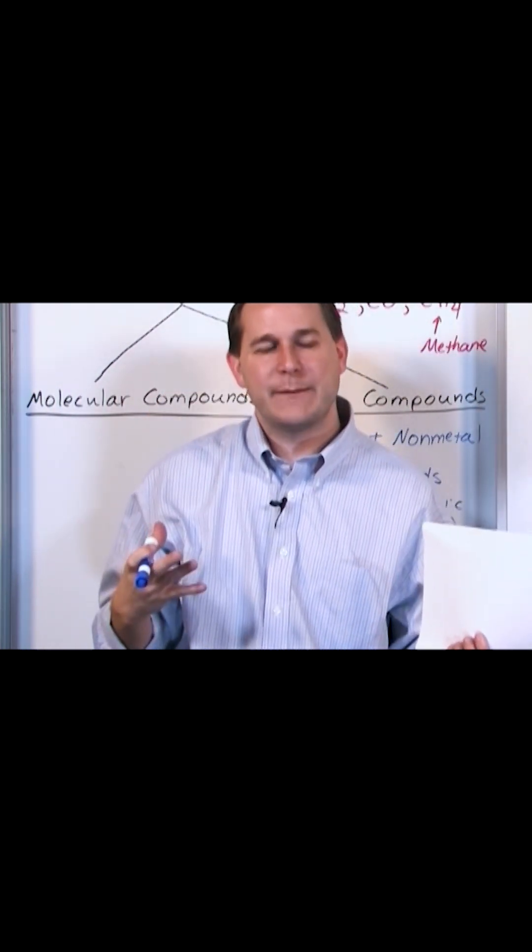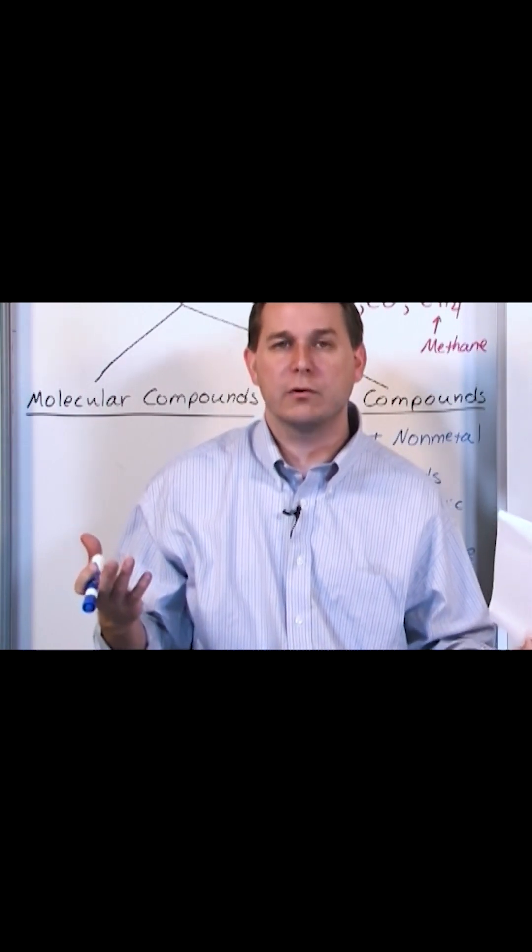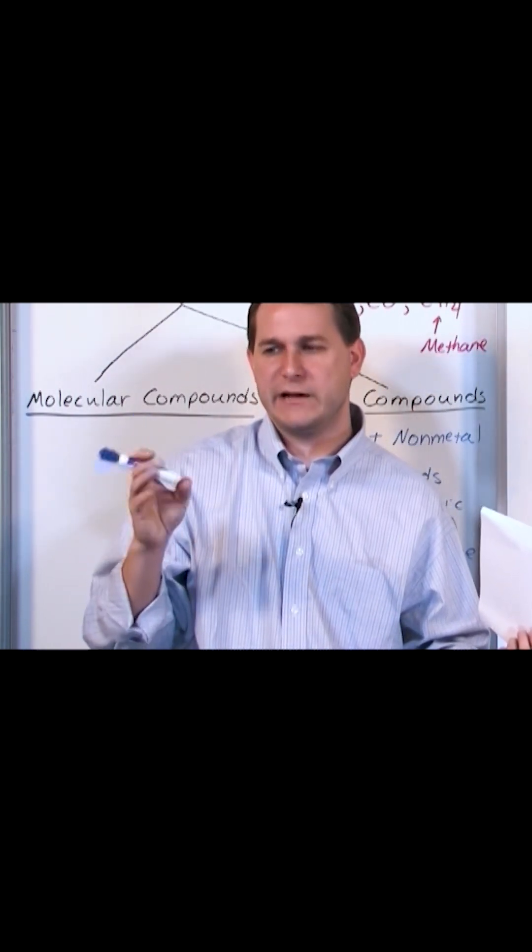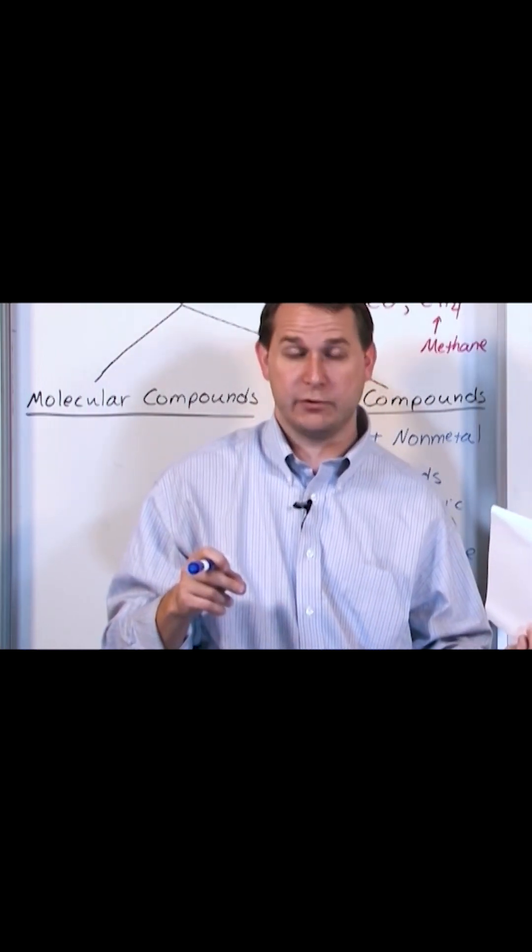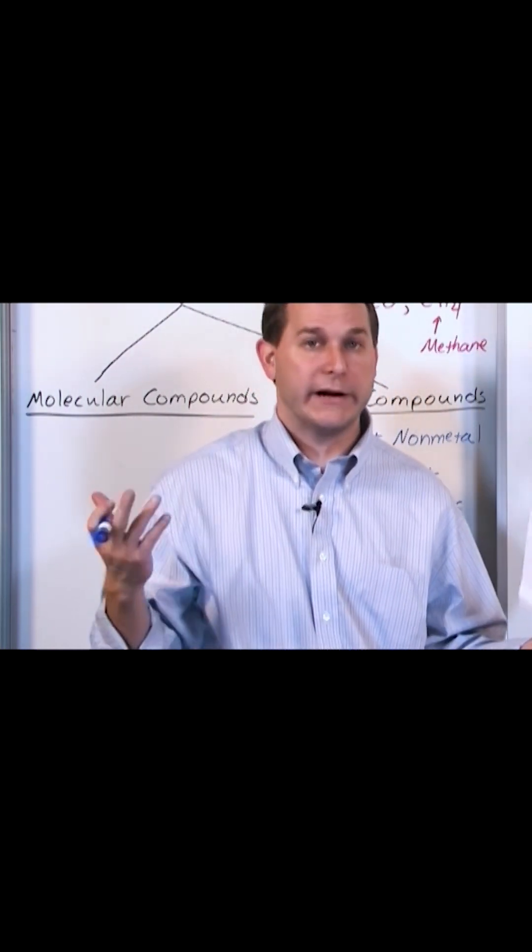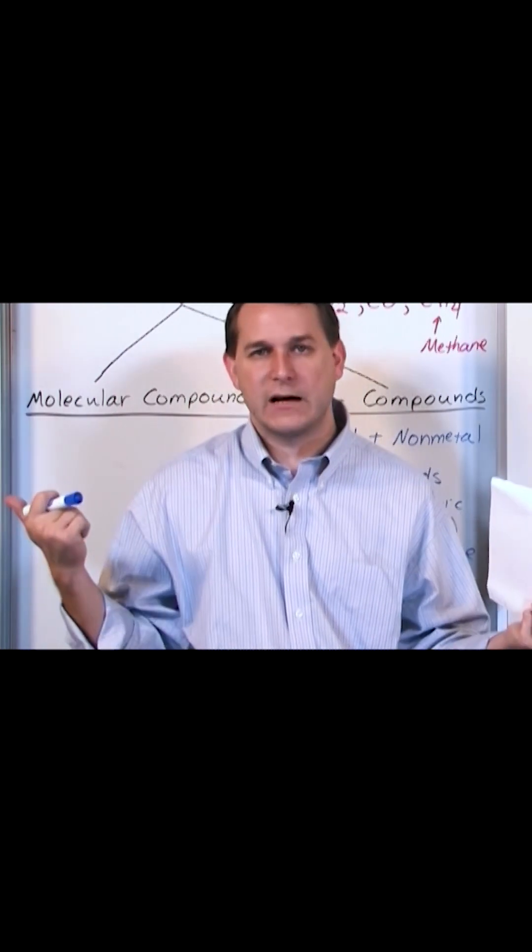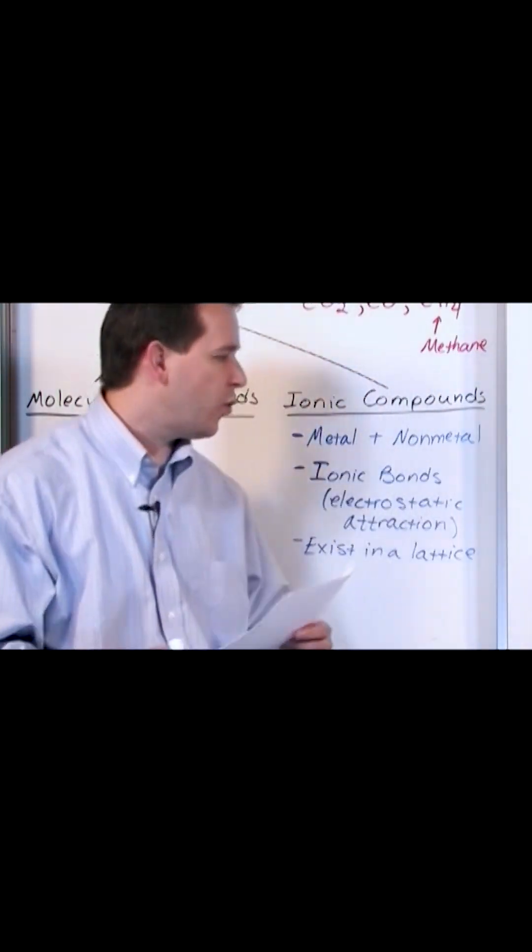The easiest example is salt, table salt, sodium chloride. Think about it: sodium, if you look at your periodic table, is on the left-hand side of the periodic table—we call it a metal—and chlorine, or chloride, is on the right-hand side. So it's a metal plus a non-metal. According to this definition,